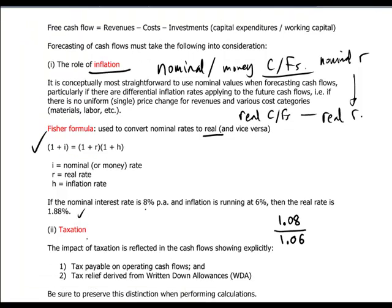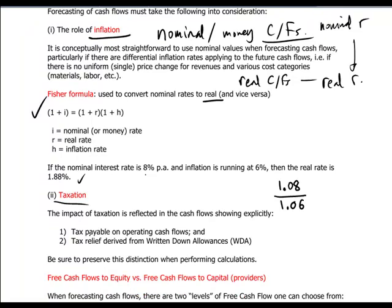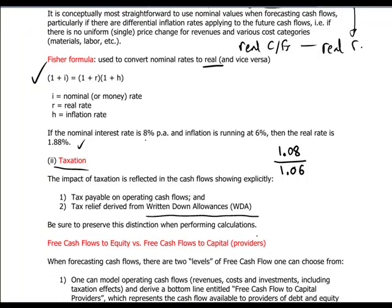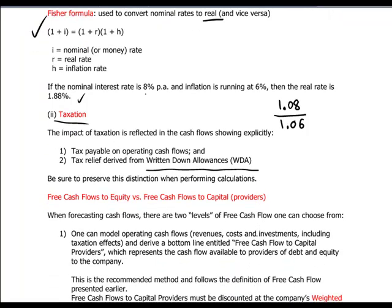Remember, in the cash flows, taxation also plays a role. We need to make sure that we can calculate the right tax on the cash flows, particularly when we have a written-down allowance and tax relief connected to the asset being invested in. There is a great deal of detail and care that has to go into constructing good cash flows prior to the discounting.